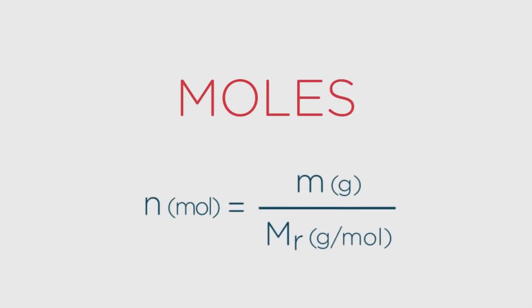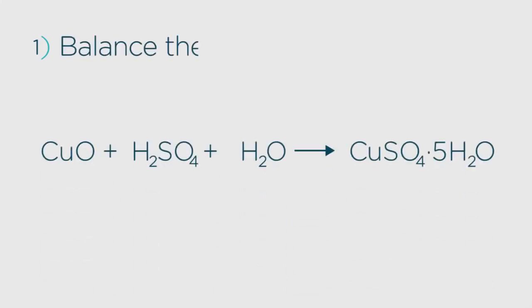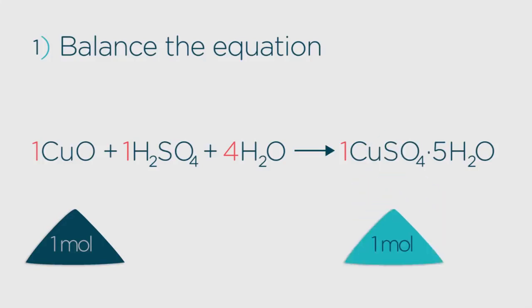But with the help of moles and a simple equation, problems like this can be easily solved. The first thing to do with any challenge like this is to look at the chemical equation and balance it. Fortunately, that's not difficult here because, as you can see, all we need to do is change the molar ratio of the water from 1 to 4. The molar ratios for all the other species are 1. You now know that every 1 mole of copper oxide reacts to form 1 mole of copper sulfate.